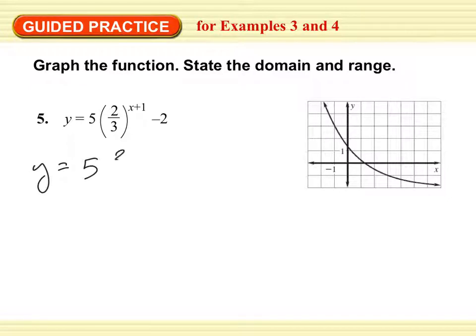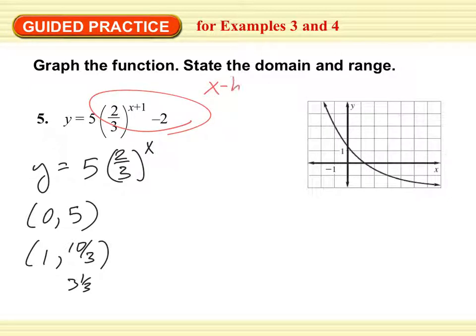Okay? Parent function, y equals 5 times 2 thirds to the x. So I have 0, 5, and 1, 10 thirds, which that's going to be 3 and 1 third. My transformations, x minus h. So h equals negative 1. So left, and k equals negative 2, so down. Let's go ahead and graph it. I have 0, 5, and 1, 3 and 1 third. Now let's go left 1, down 2. Left 1, down 2. And we have our curve.